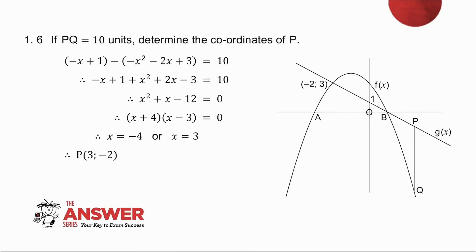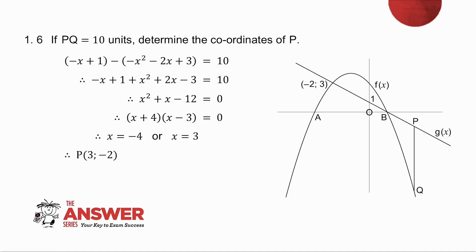Question 1.6 says the length of PQ is 10 and asks you to find the coordinates of P. I take the y value at P, which is my straight line, minus the y value at Q, which is my parabola, and make it equal to 10. I solve for x. Since PQ is to the right of b, the x value is 3. P lies on the straight line, so I substitute and get that P's coordinates are (3, -2).